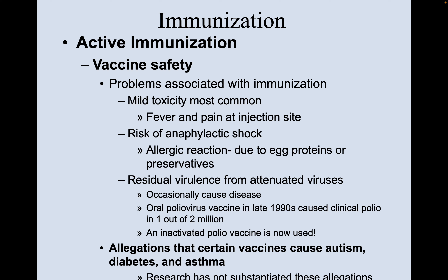Some problems associated with immunization: mild toxicity is probably the most common side effect — fever and pain at the injection site. There is a risk of anaphylactic shock, an allergic reaction, usually due to other components that stabilize the vaccine, like egg proteins or preservatives. You may also have residual virulence from attenuated viruses. For example, in the late 90s, oral polio virus vaccine caused clinical polio in about one out of every two million people vaccinated. Fortunately, an inactivated polio vaccine has been used since the 2000s, and this one can't make people sick.